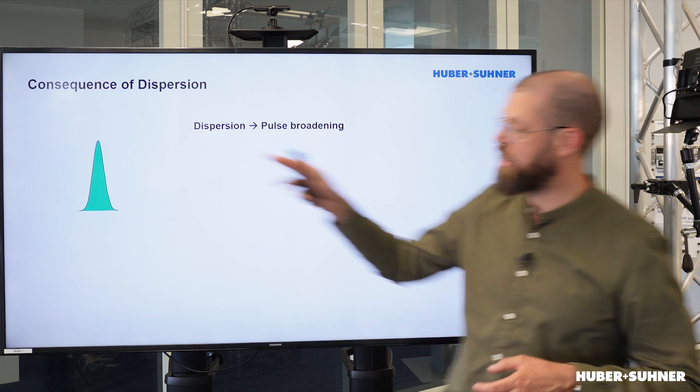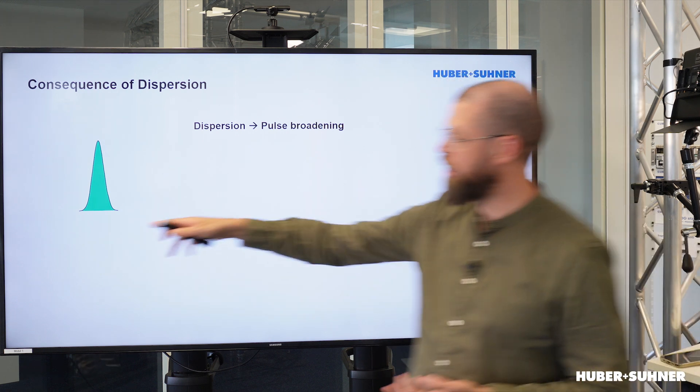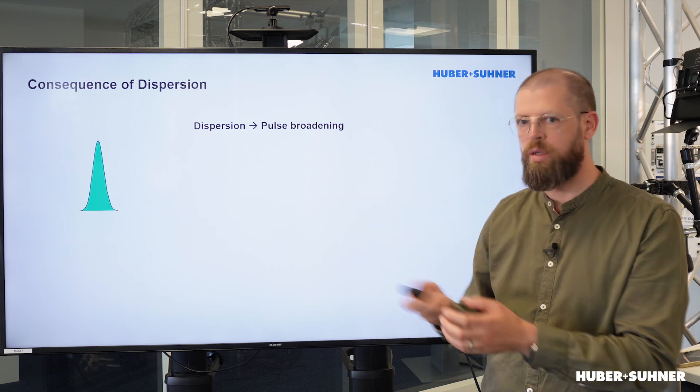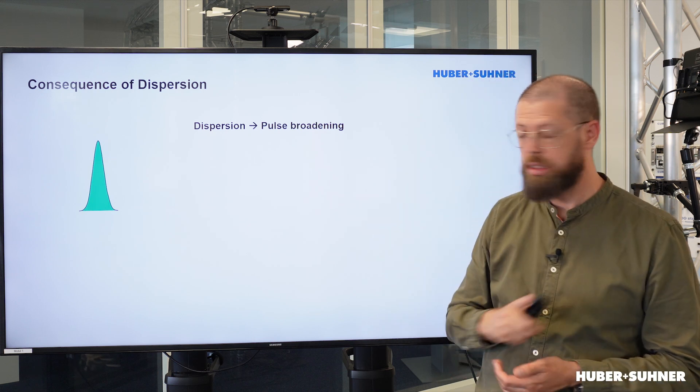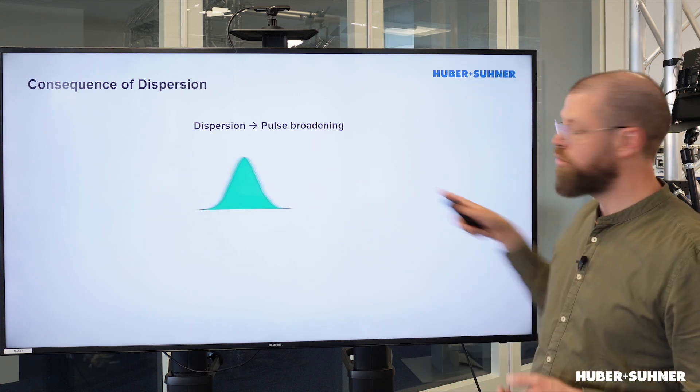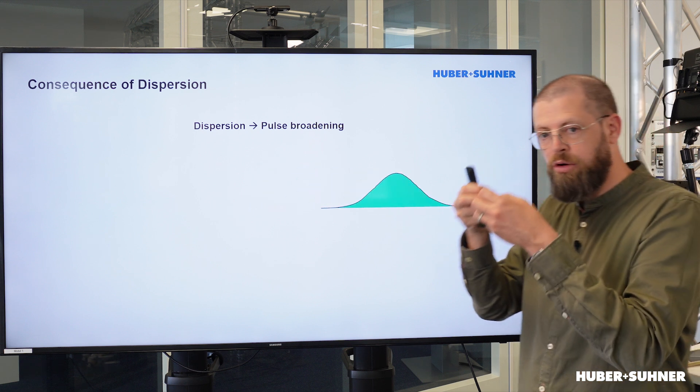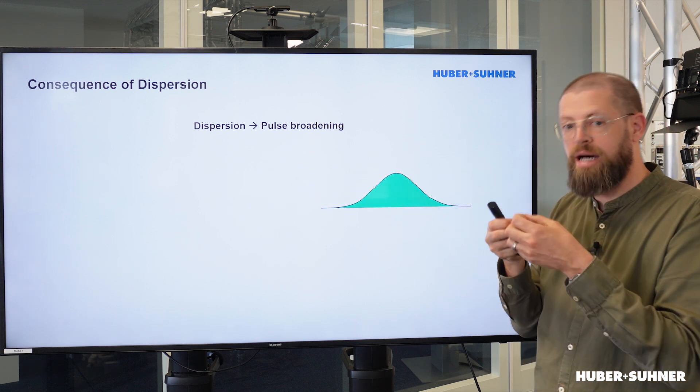The point is that at the beginning of the transmission line, we've got these nice, clean, crisp pulse signals. But while they are traveling through the fiber cable, those light pulses start to broaden. They start to disperse.